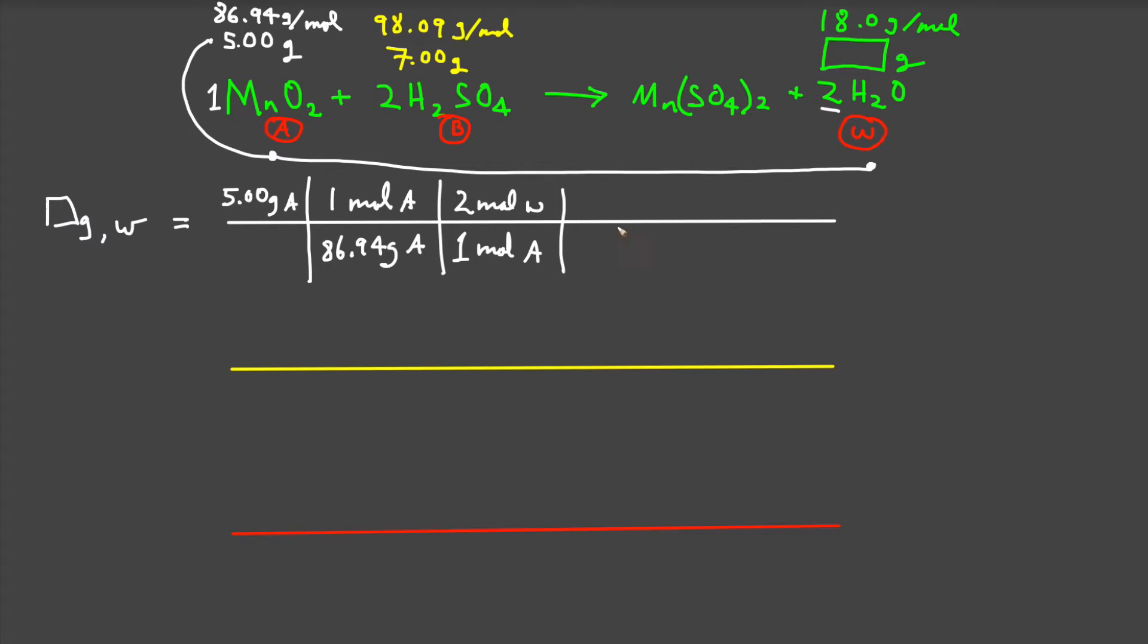And finally, for every one mole of water, I will have 18 grams of water. And that multiplies out to be 2.07 grams of water. Five grams of manganese dioxide will give me 2.7 grams of water.